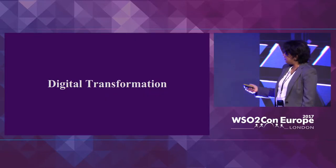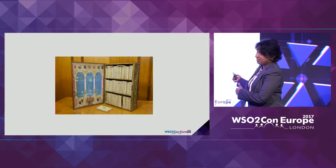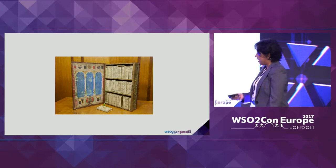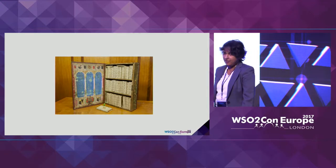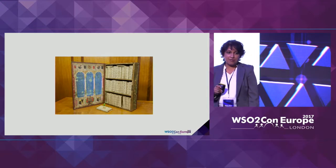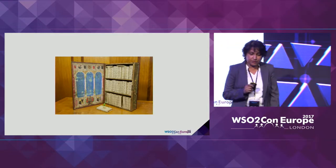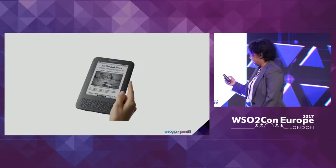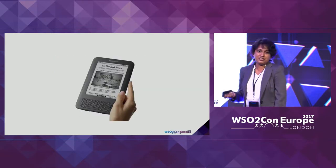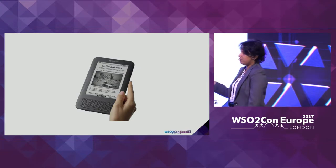Digital transformation — I'm not going to talk much about it, but I like to use this analogy. This is a Jacobean traveling library dating back to 1617, found in the British Library. It has miniature versions of 50 famous books you can take around when you travel. It's essentially the old version of the Kindle. I like to think of digital transformation in the same way — you make business different through technology.